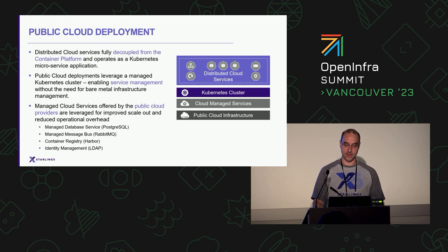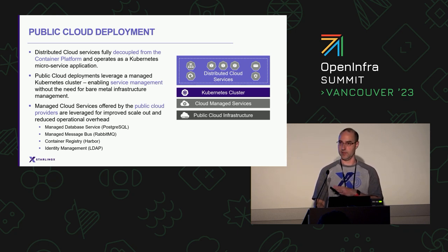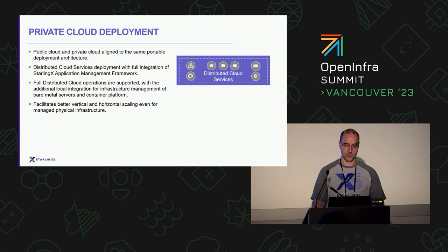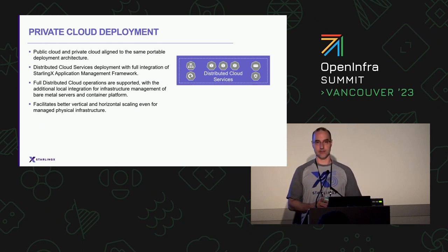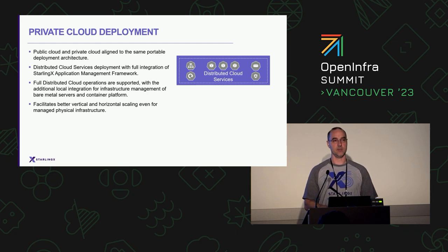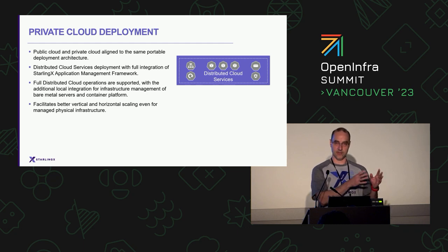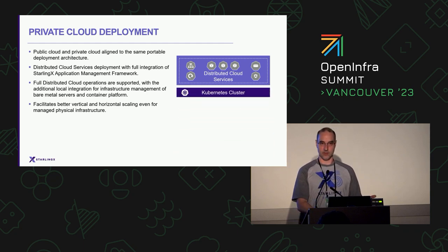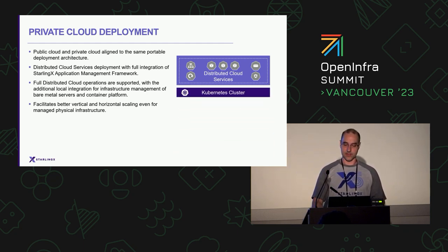As we'll see in the next topic on geographic redundancy, many public clouds offer high availability clusters in different regions, and we'll talk about how we'll leverage that. Because this architecture is portable, we can use the exact same design for our private cloud — rather than something separately deployed specifically for public cloud. For on-prem, we're talking about the full stack offered by StarlingX, which brings the containerized platform, full lifecycle management, and all the bare metal services management.